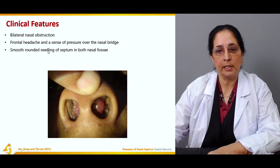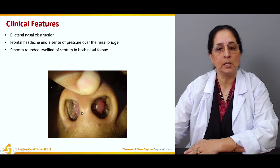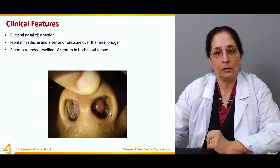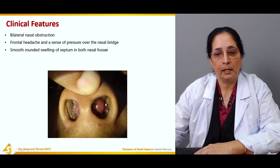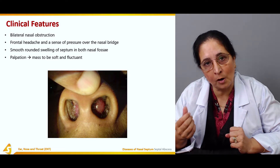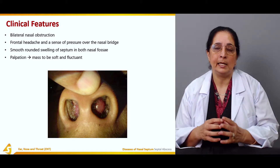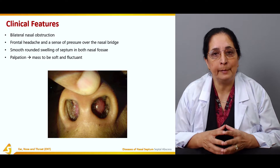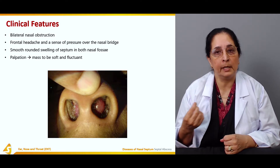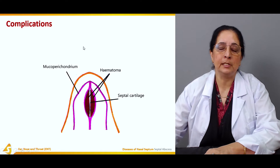On examination, there is a smooth, rounded swelling of the septum visible in both nasal fossae as a result of the hematoma. On palpation, these swellings are soft — not hard — and fluctuation is present due to the accumulation of blood. The masses are easily movable and fluctuate very easily.